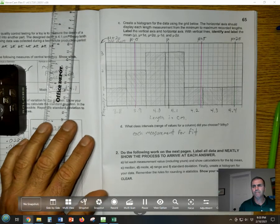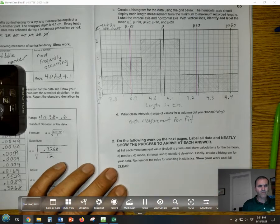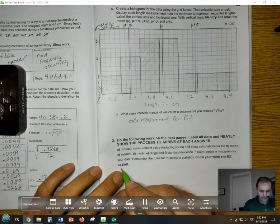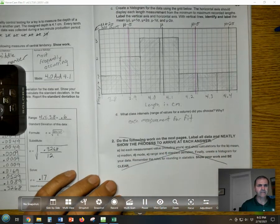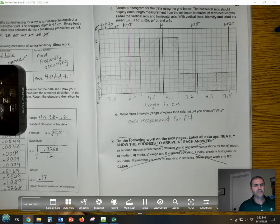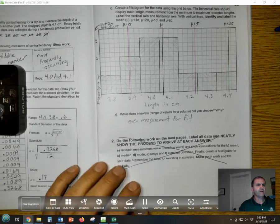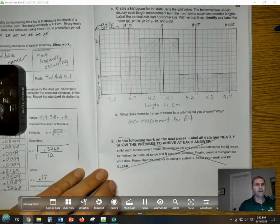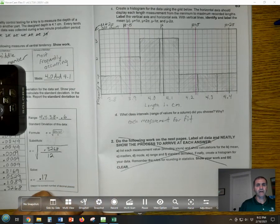This stuff down here that we normally would do when we're in the classroom, we're going to skip. We just kind of don't have time for that. So you can go ahead and cross this out, but we will be doing some statistics with a spreadsheet next. So that will be the next video. You're going to take a picture of this page and turn that in, and then we'll get started on spreadsheet stuff.